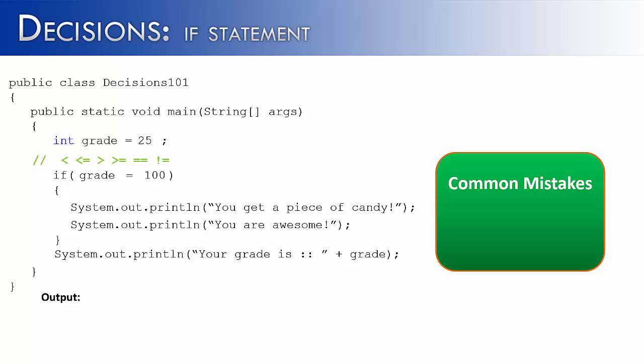Here is another common mistake with if statements, and hopefully you can pick it out. We're using the assignment operator, not the relational operator. The relational operator has two equal signs. If you do this, you're going to get an error because it thinks that you're trying to assign 100 to grade, and that just can't happen inside of this if statement. So be very careful when you're writing if statements to use the correct equality operator. If you're going for equality, make sure you use the double equal sign.